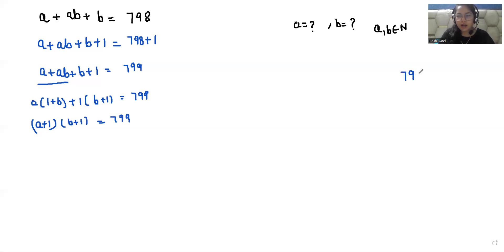We know that if we multiply 17 times 47, we get 799. So as we know that 17 and 47 are both prime numbers, I can replace it: (A plus 1)(B plus 1) equals 17 multiplied by 47.